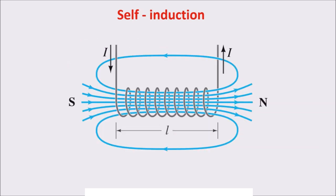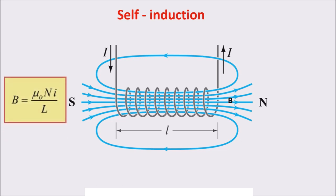Now we come back to our inductor, or our coil. If a direct current passes through the coil, a magnetic field B is created, proportional to the current and to the geometric characteristics: mu zero, N, and L. If we now pass a variable or AC current in the coil, a variable magnetic field is created. A variable magnetic field passing through the coil ring creates a variable magnetic flux, so an EMF or voltage is created in every ring. For the whole coil, the total EMF is minus N times the flux variation.